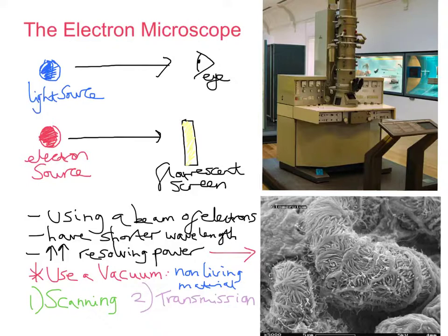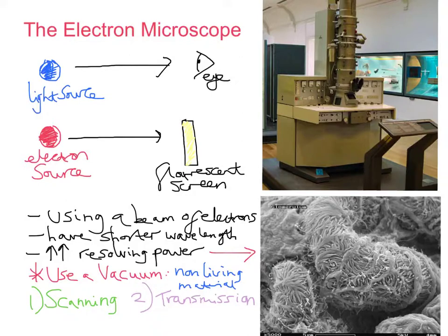The resolving power of a scanning electron microscope is about 20 nanometres — still 10 times better than an optical microscope. The magnification of an electron microscope can be up to about 500,000. The light microscope has a resolving power of about 200 nanometres, so you can see the SEM is able to resolve distinct points as separate to a much better degree.